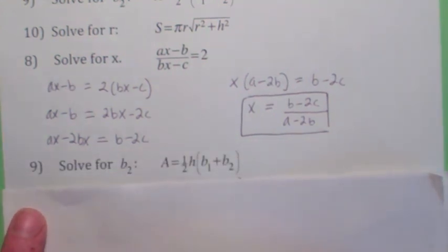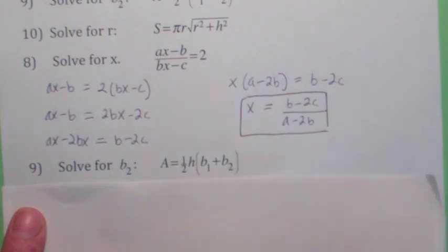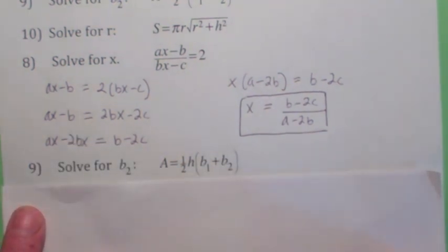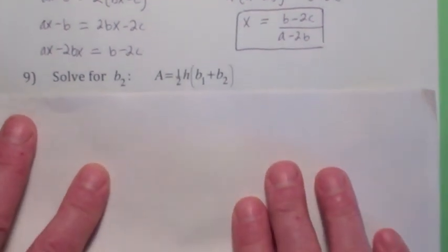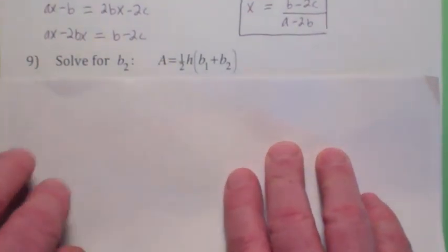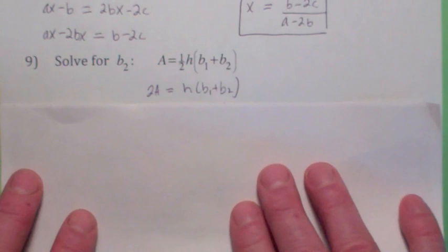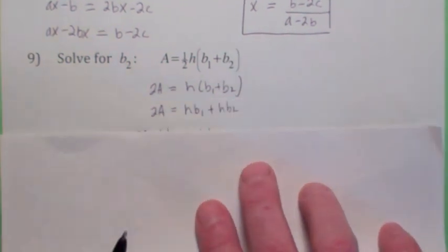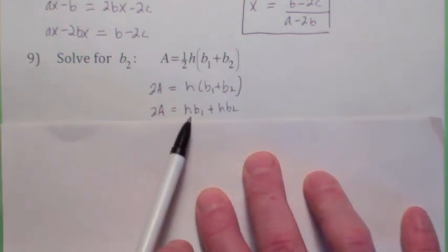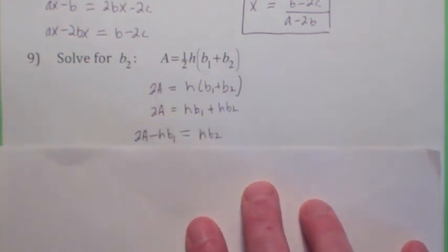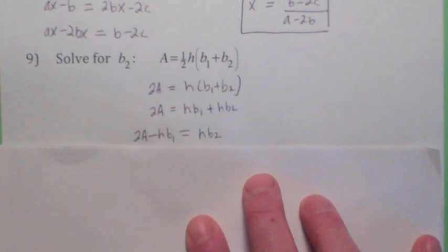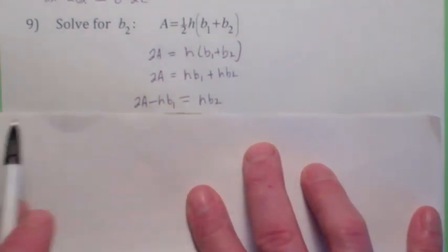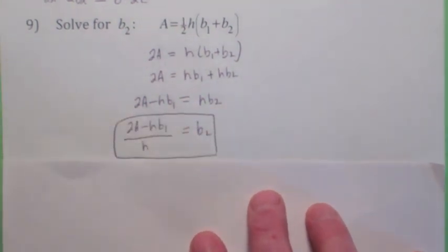Now for number nine, that looks like an equation with fractions as well. What do you do if you have an equation with fractions? How about getting rid of the fractions? So let's multiply both sides by 2. And we're trying to solve for b2. There's a couple ways to go here. I'm going to multiply the right side out. Then I'm going to subtract hb1 from both sides. Now we're trying to solve for b2. So now we're just going to divide both sides by h. There's your answer.